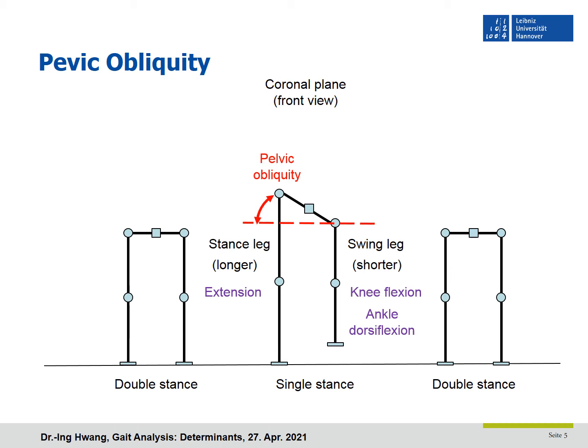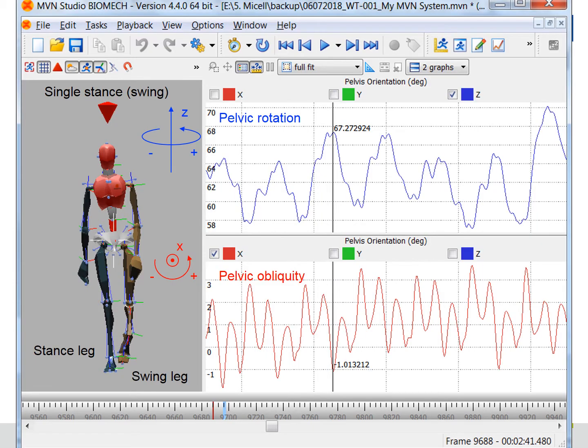If the slope is higher, the hip vertical movement and trunk vertical movement will be more different. This is a walking avatar in single stance period, shown in the coronal plane. There are two graphs on the right side. The upper one indicates pelvic rotation and the lower one demonstrates pelvic obliquity.